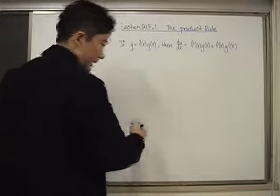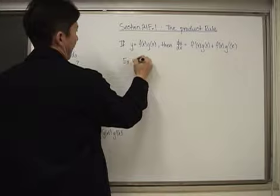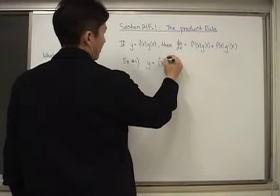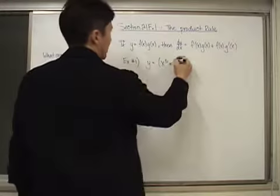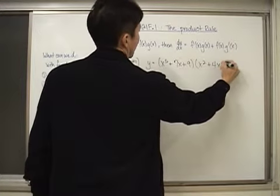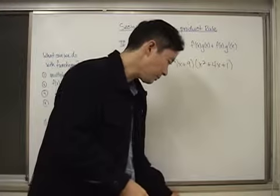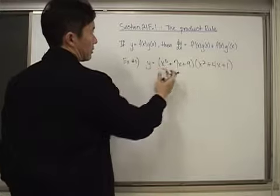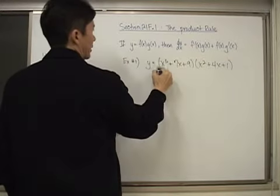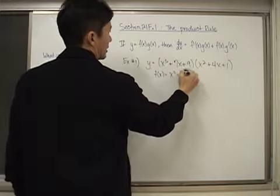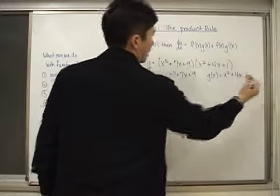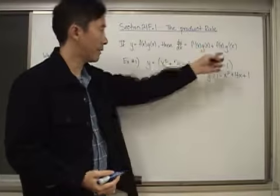Let's look at Example 1. Say y is equal to (x to the fifth plus seven x plus nine) times (x squared plus four x plus one). We associate the first factor with f of x and the second with g of x. So f of x equals x to the fifth plus seven x plus nine, and g of x equals x squared plus four x plus one. We also need f prime of x and g prime of x.